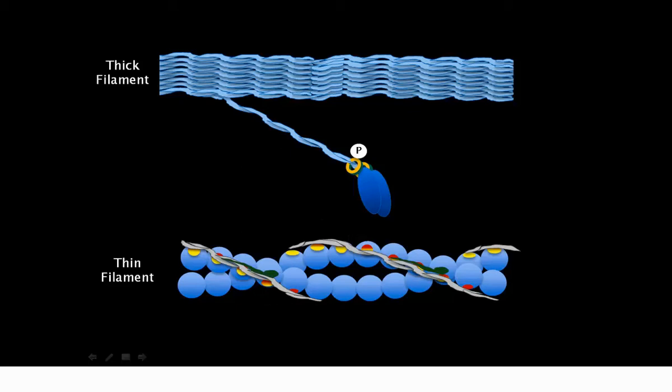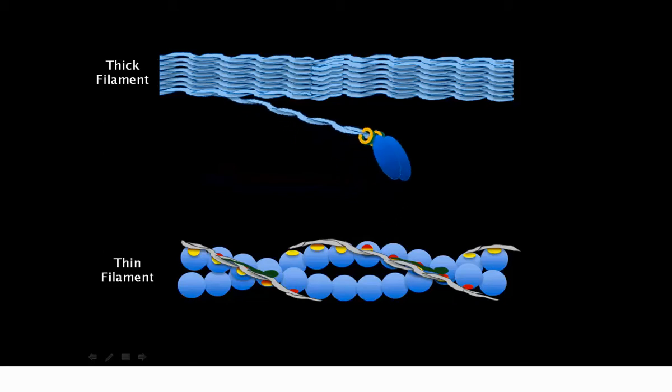This potentiating effect can last for several minutes after a single bout of contraction, and ends whenever myosin targeting phosphatase dephosphorylates the regulatory light chain, and the myosin head returns to its original position close to the thick filament.